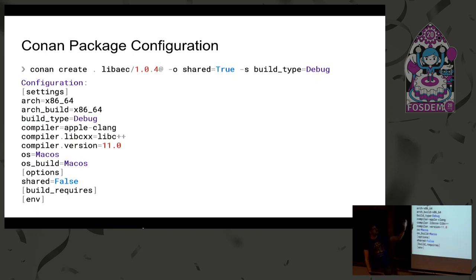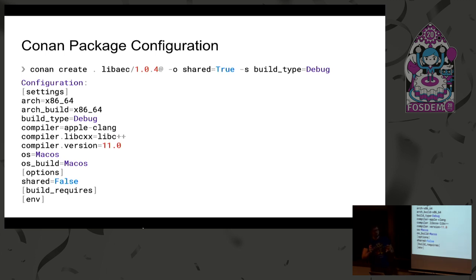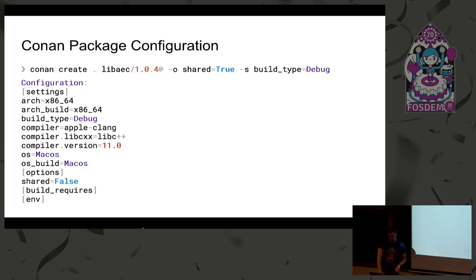We can also change settings: build type — debug mode, shared or static libraries — these options can all be applied. The recipes know how to use these options and build exactly what you're looking for. We see the settings that came out of it: building for macOS, the compiler version, Apple Clang. On a Linux machine, you might have GCC or regular Clang — all these different variations are tracked, so you're referencing exactly what you want.